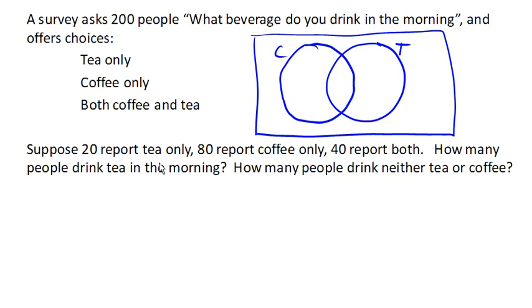Now we can start introducing the information we know. We know that 20 people report tea only, so they would be in this region here. The part that only includes tea does not include C. 80 people report coffee only. 40 people report both. So they will be in the intersection of those two sets.